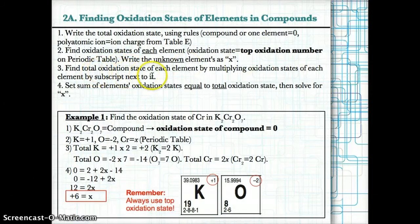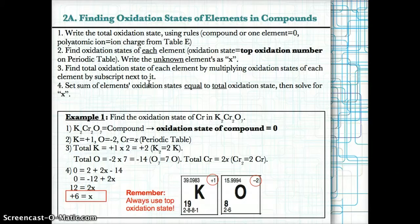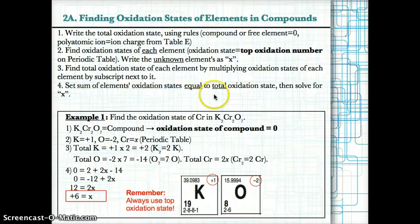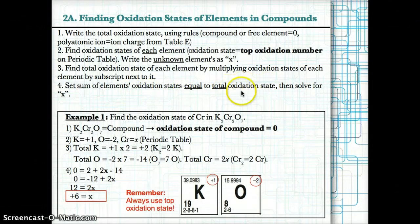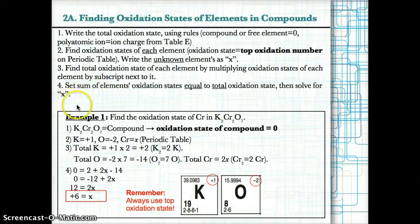Step three: find the total oxidation state of each element by multiplying the oxidation state by the subscript next to it. For example, Na2 would be +1 times 2, giving +2. Step four: set the sum of the elements' oxidation states equal to the total oxidation state, then solve for X. Add up all individual total oxidation states and set that equal to zero for a compound or to the ion charge for a polyatomic ion.